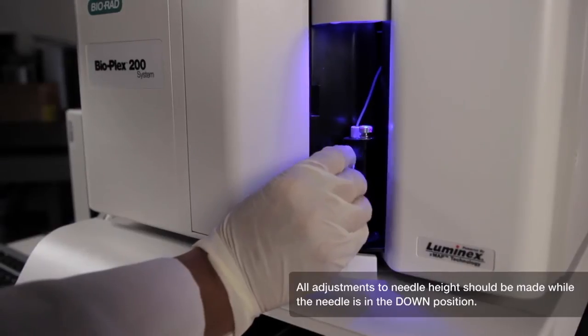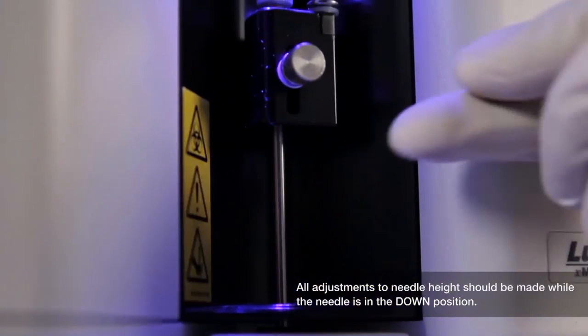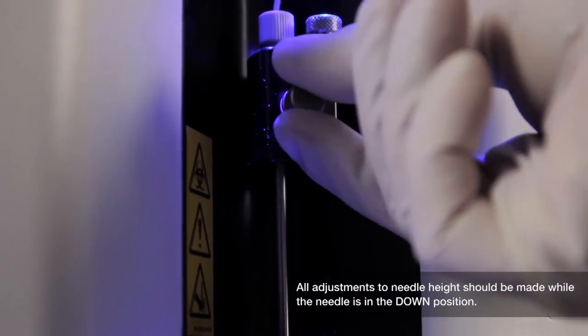With the needle in this down position, slowly loosen the needle height adjustment thumb screw so the needle housing can freely move up and down.